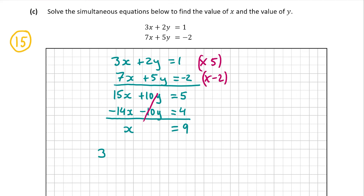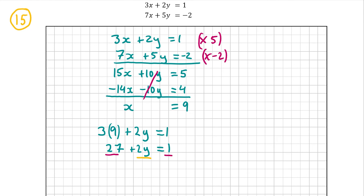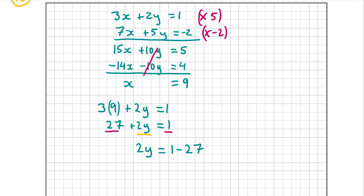I'm going to pick the first equation. So I'm going to have 3 by 9 plus 2y is equal to 1. So 3 by 9 is 27, plus 2y is equal to 1. Now I want to get at the end of this to have y equal to some number. So the first thing to do is have all like terms on the same side. The terms with y on the left-hand side — which is just 2y — and the terms without a y on the right-hand side — which are 1 and 27. So I'm going to move the 27 over to the right-hand side, and it's going to go over as minus 27. That gives me 2y is equal to 1 minus 27, and 1 minus 27 is equal to minus 26. So now we have 2y is equal to minus 26.